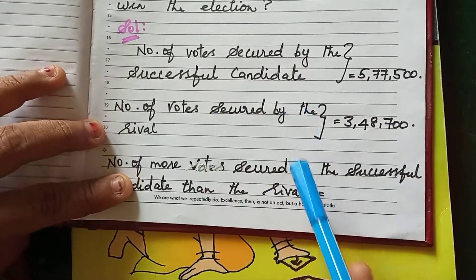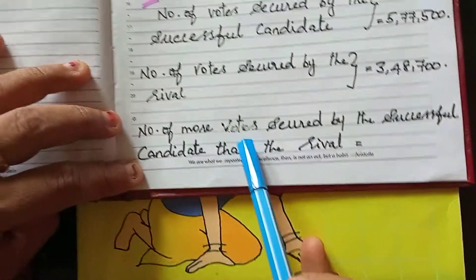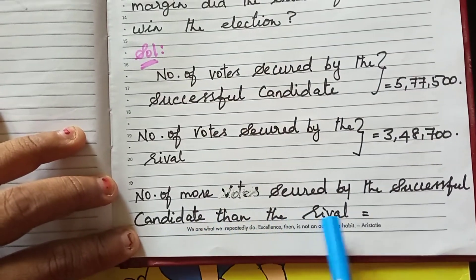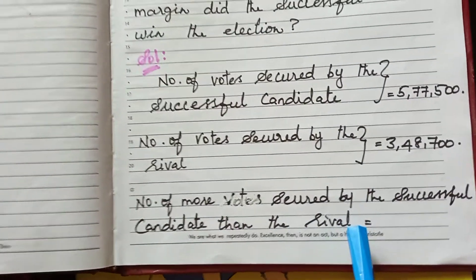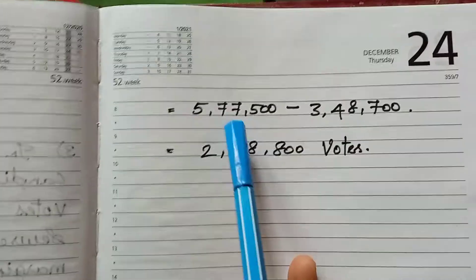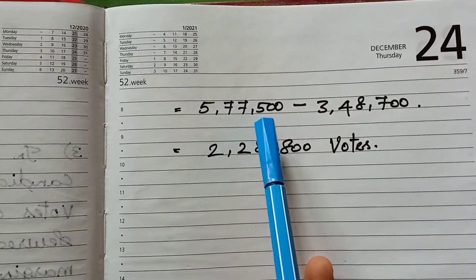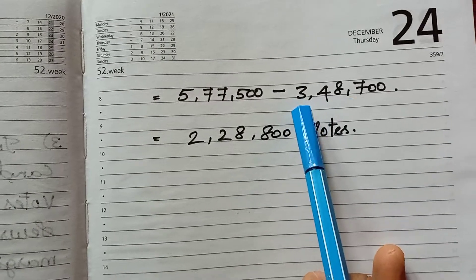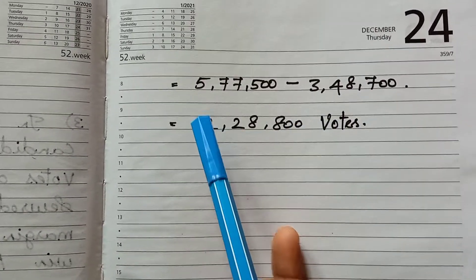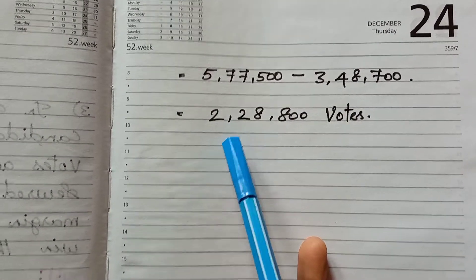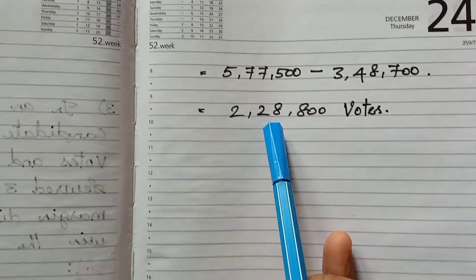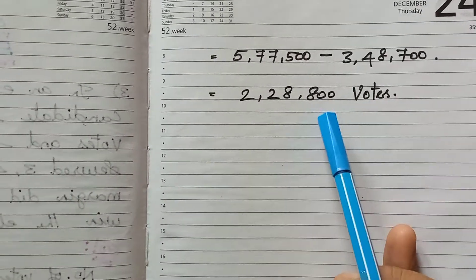Number of more votes secured by the successful candidate than the rival: 5,77,500 minus 3,48,700. After subtracting, we get the answer as 2,28,800 votes secured by the successful candidate as the margin of victory.